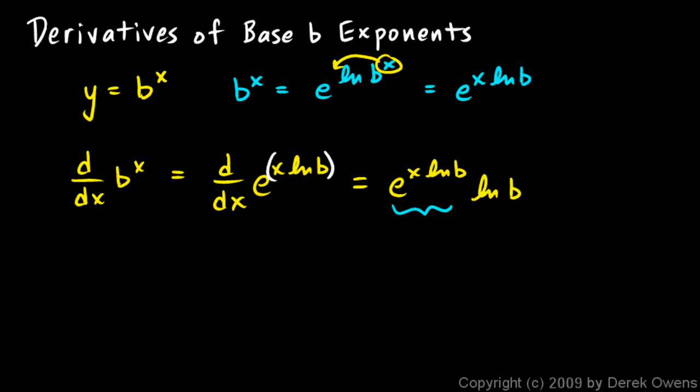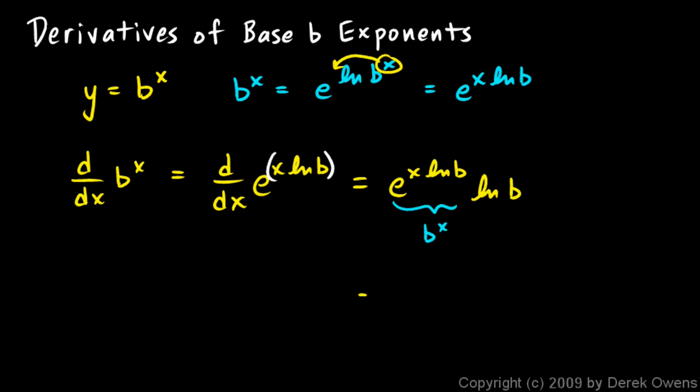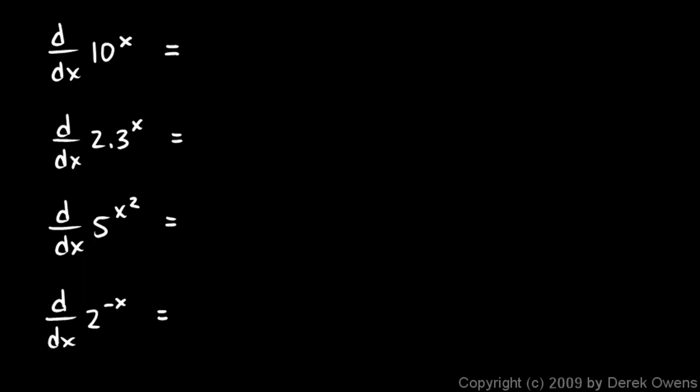To simplify, we recognize that e^(x·ln b) is just b^x. So the result is b^x times ln(b). The derivative with respect to x of b^x is b^x times the natural log of b. We'll do a few examples to demonstrate this derivative.